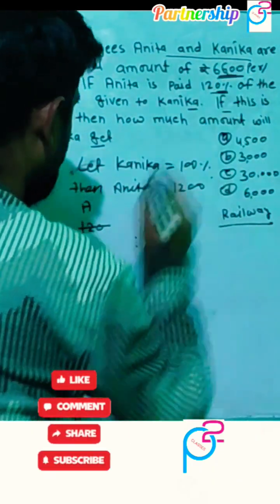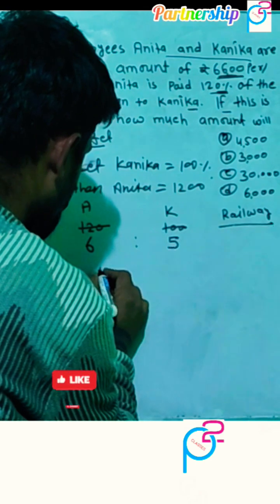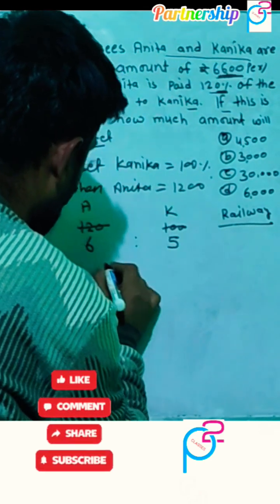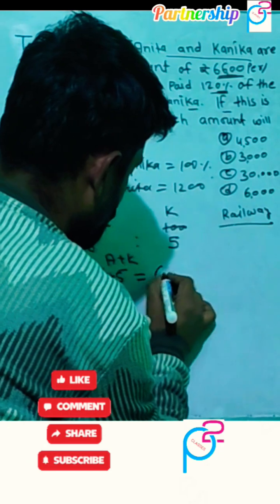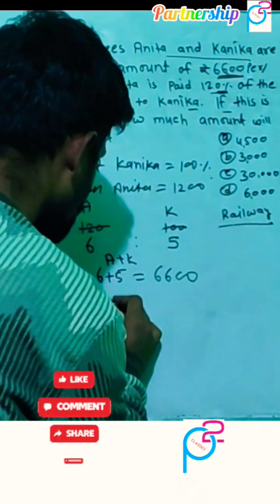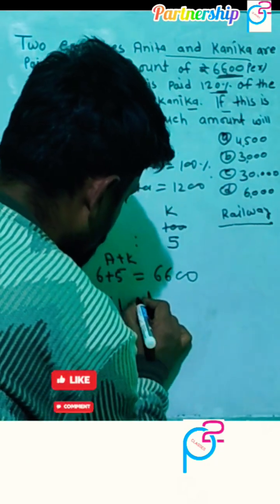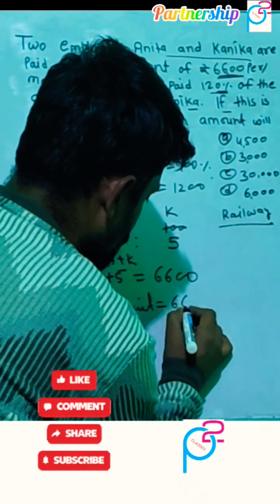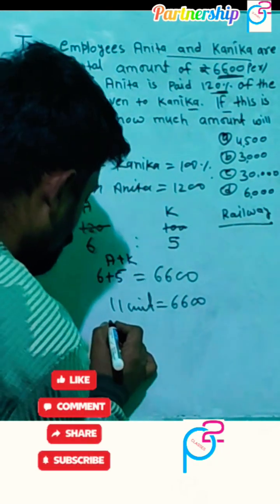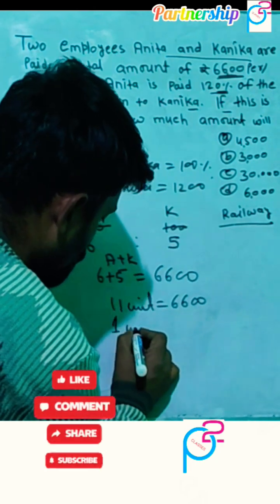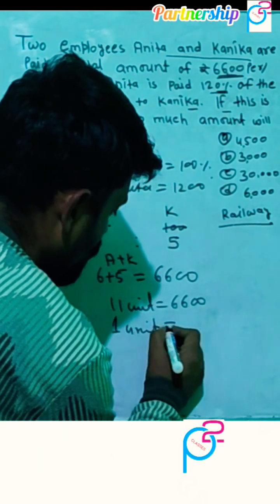you write here 6 plus 5, means Anita plus Kanika, equals 6600. So 11 units equal 6600. If you want to find the value of one unit, one unit equals